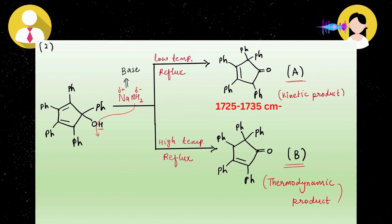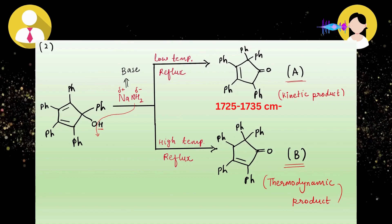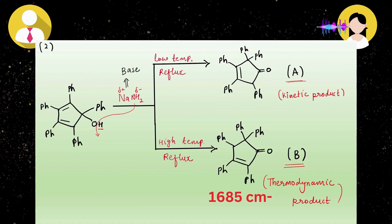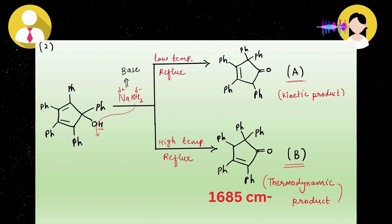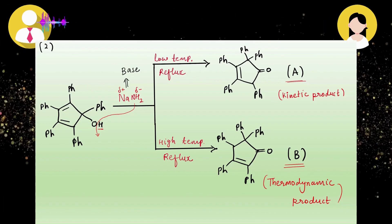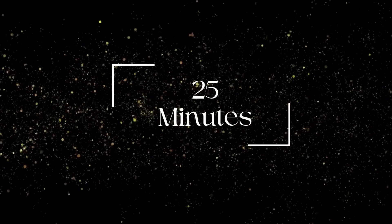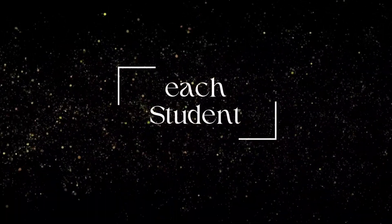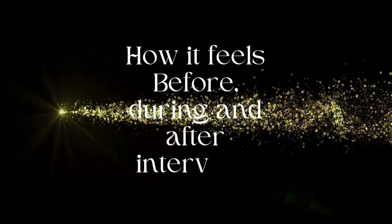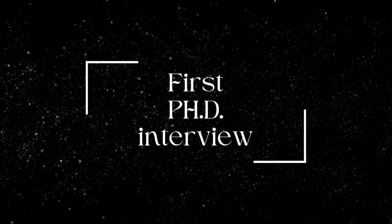He asked can you tell me its values? I said yes sir, normal carbonyl peak appears at 1700 cm⁻¹. So product A will show a CO band somewhere around 1725 to 1735 cm⁻¹, whereas in product B, the CO band will appear at 1685 cm⁻¹. He said okay, good explanation. That's how my 25 minutes got over, because my interview was in a slot and they provided each student 20 to 25 minutes.